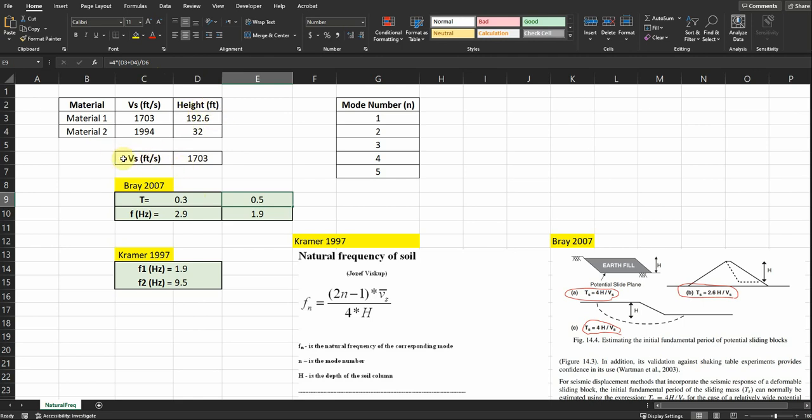Using this equation 4h divided by vs, we got 0.5 for the period. If we flip it, 1 divided by that period, we get the frequency of 1.9 using this equation, and I got 2.9 using the first equation.